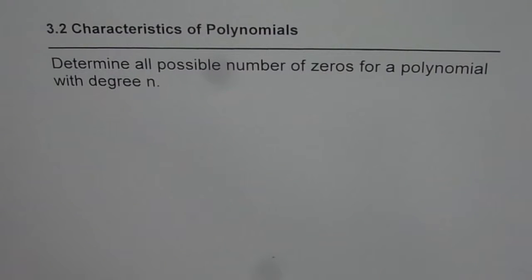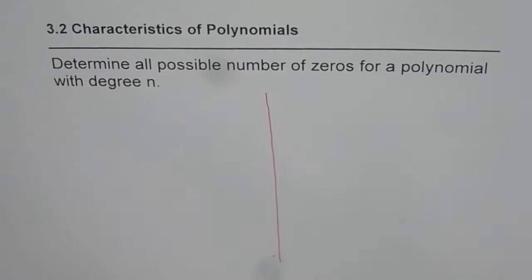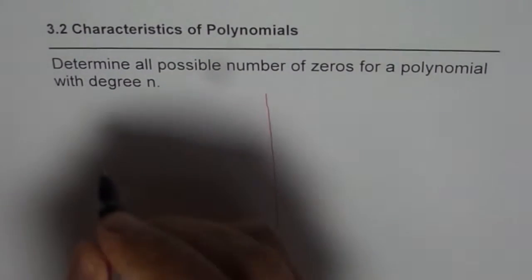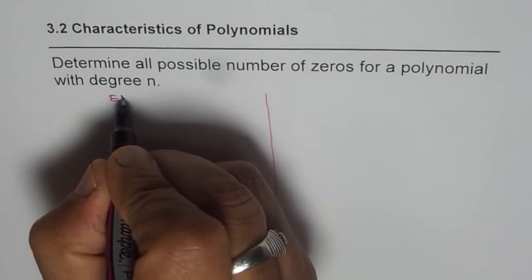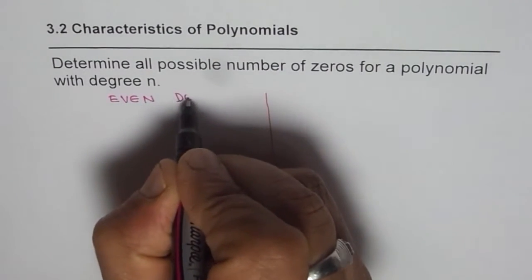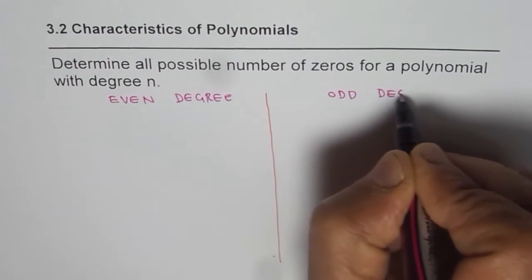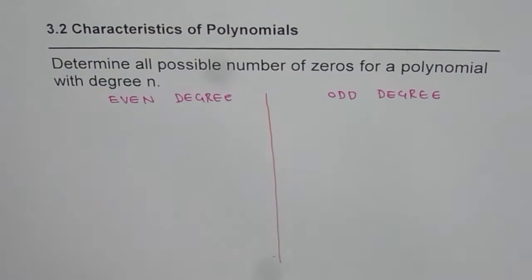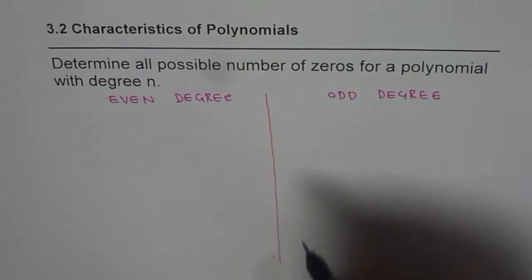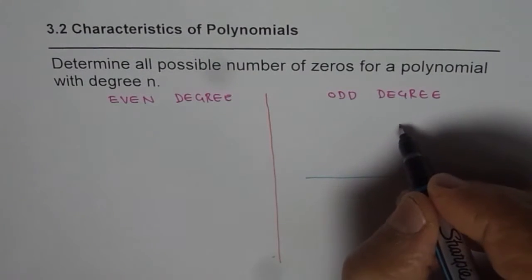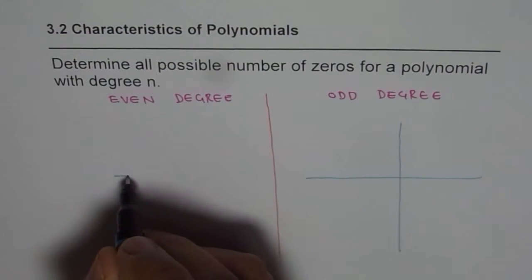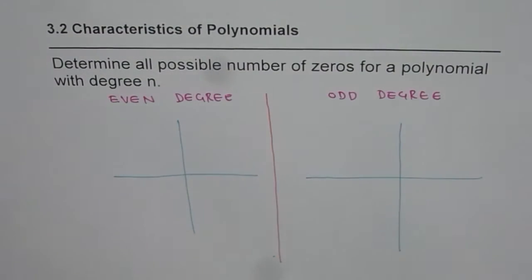Now let us understand zeros of a polynomial. We'll consider even and odd degree polynomials separately. The reason is very clear - their curves are different. An odd degree polynomial has no restriction in range, however, even degree polynomials do have a restriction in range. So that makes a huge difference as far as zeros are concerned.